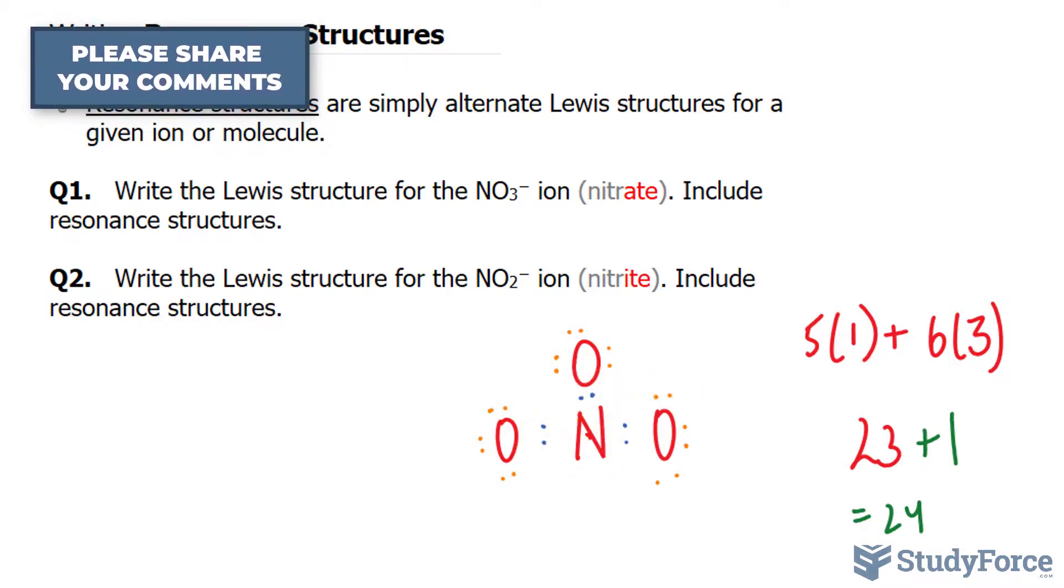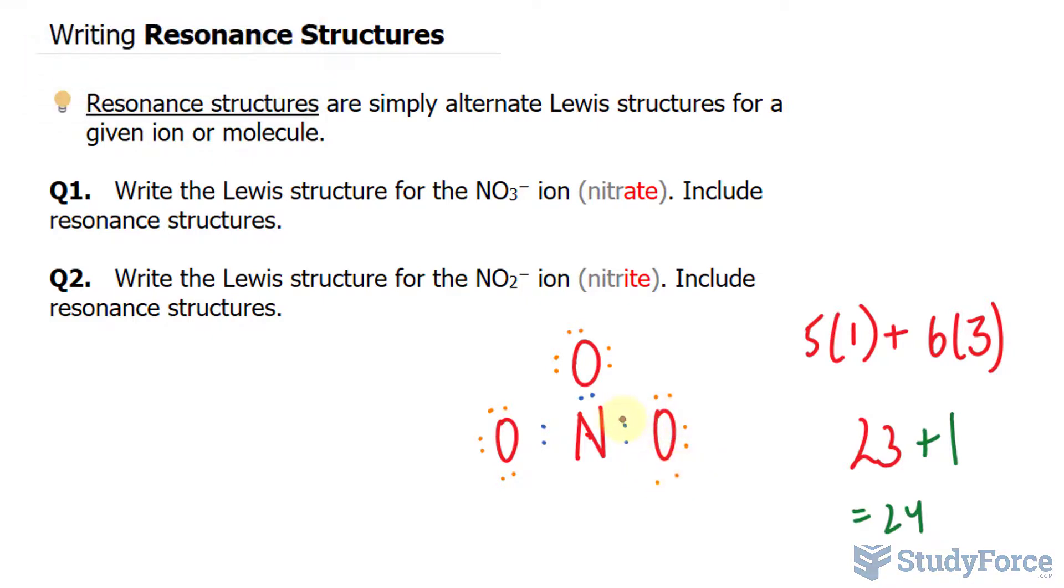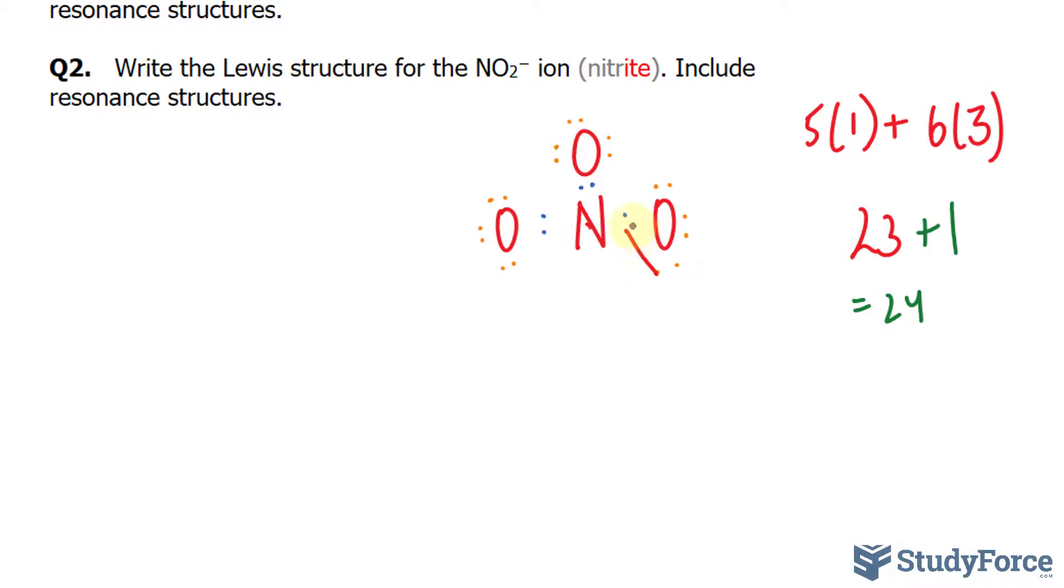So what can happen is this oxygen can form a double bond with nitrogen. So these two can be shared, and these two can be shared, giving us a structure that looks like this. Oxygen with nitrogen, a double bond with this oxygen, and a single bond with this one. Then, just as before when we looked at Lewis structures with polyatomic ions, we put this in brackets and put that negative.